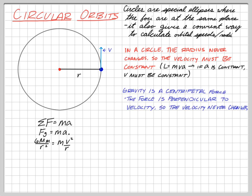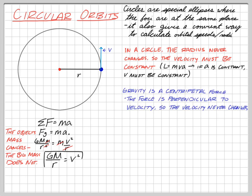The satellite's mass cancels out, but the mass of the Sun — or whatever body is being orbited — never goes away. What we find is that orbital velocity depends only on the mass of the central body and the distance from it. That means anything orbiting with Earth around the Sun moves at the same speed regardless of its own mass.